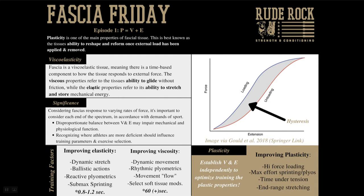Elasticity refers to the ability to stretch and viscosity refers to the ability to glide. Another thing to be aware of is hysteresis — this gray area in the middle that represents the amount of energy lost in soft tissue structures including fascia. The blue curve here shows force and extension on the Y and X axis respectively. On the loading phase we see a certain slope shape, while on the unloading phase there is a difference. This hysteresis loop is where energy is being dissipated or lost, and the goal is to close the gap between the two. Plasticity plays a significant role in that.